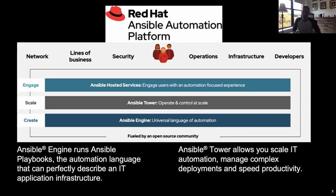Ansible is really one of the most, if not the most, popular automation platforms in the industry today. In 2019, it was the number four most contributed-to GitHub project in the open source community. In 2020, it was the number seven most downloaded Python package available. This is an extremely popular automation platform that runs on basically every type of platform available to our customers.